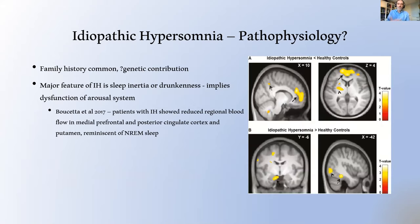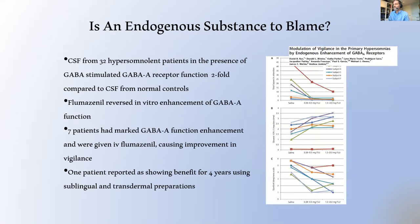There is also a possible genetic contribution, as positive family history is relatively common in IH patients. Some have speculated that the major clinical issue — sleep inertia or sleep drunkenness — implies dysfunction of the arousal system. Brain imaging of regional blood flow has demonstrated changes within the prefrontal cortex and the cingulate cortex, reminiscent of non-REM sleep, suggesting some degree of overlap between the waking state in IH and aspects of non-REM sleep.